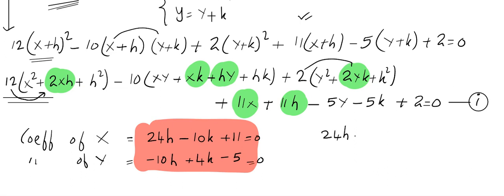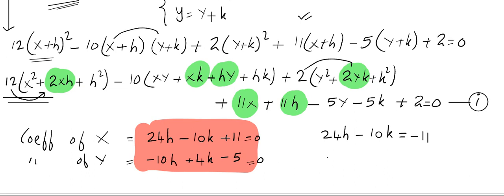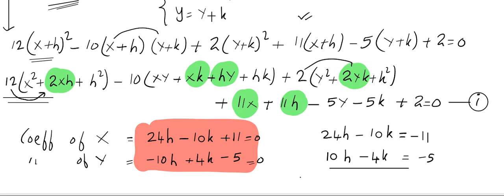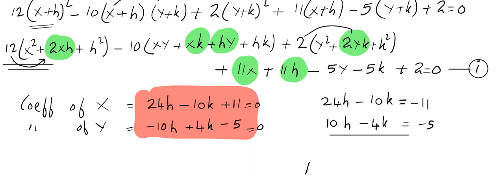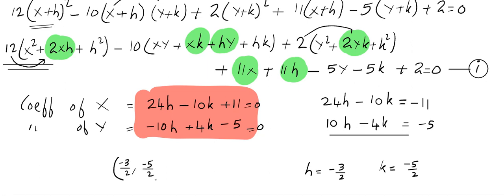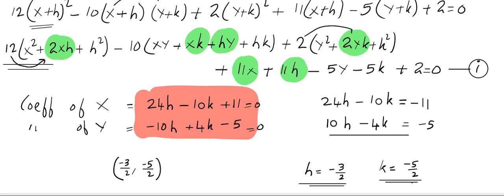Using a calculator, the new origin is (−3/2, −5/2). In other words, if you use h = −3/2 and k = −5/2, then all the linear terms will disappear.